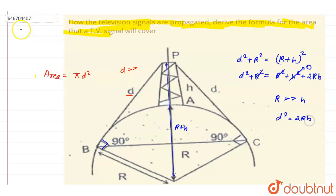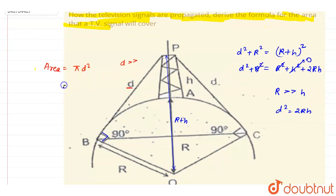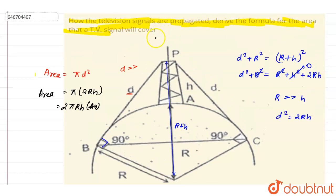Right, so you can just write down that the area equals π(2Rh), so it will be 2πRh, and this will be the answer of this question. We wanted the area which will be covered by this tower, and it will be 2πRh.